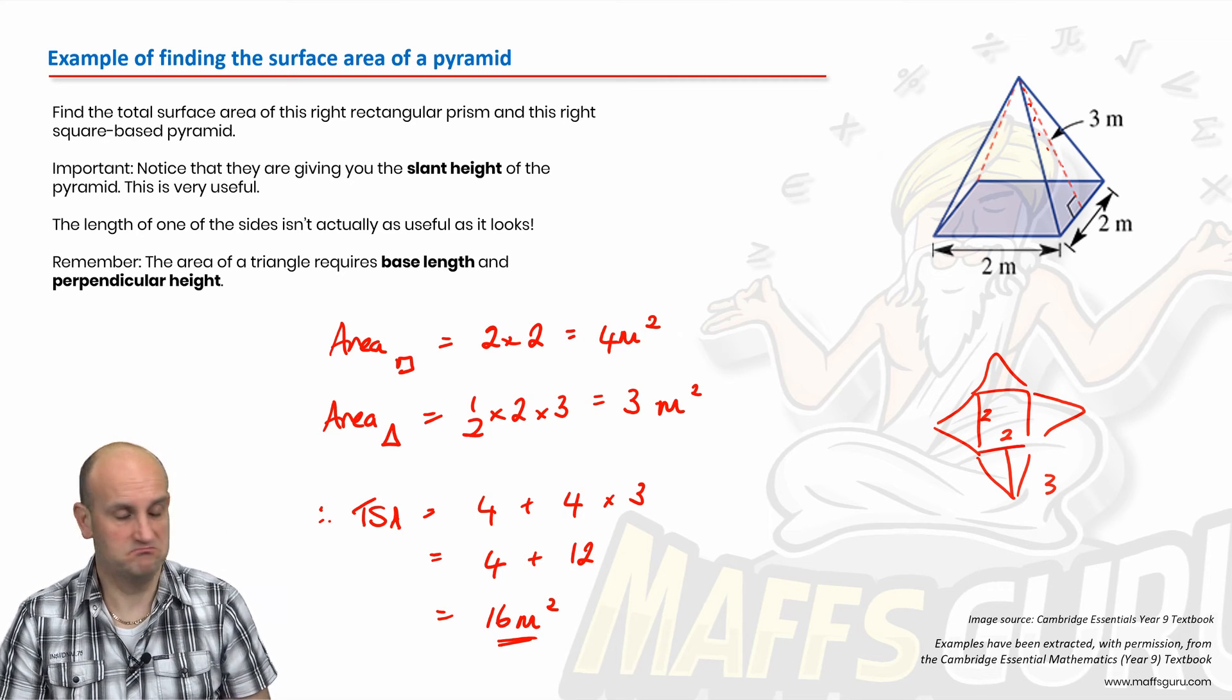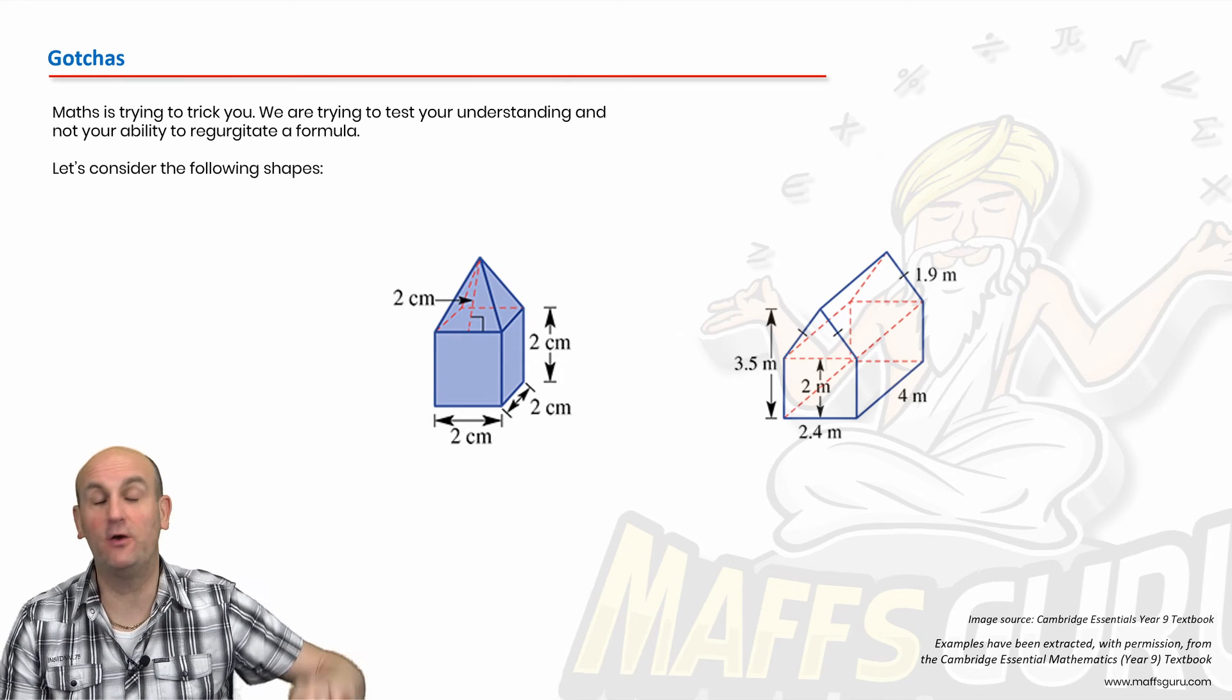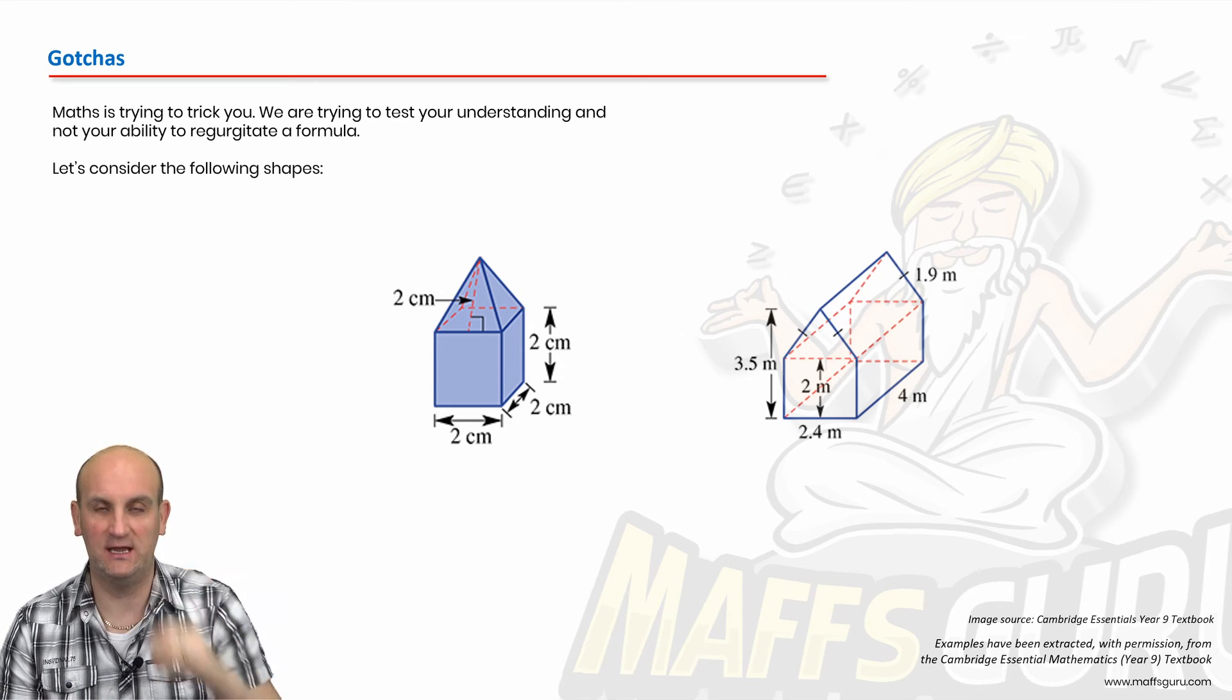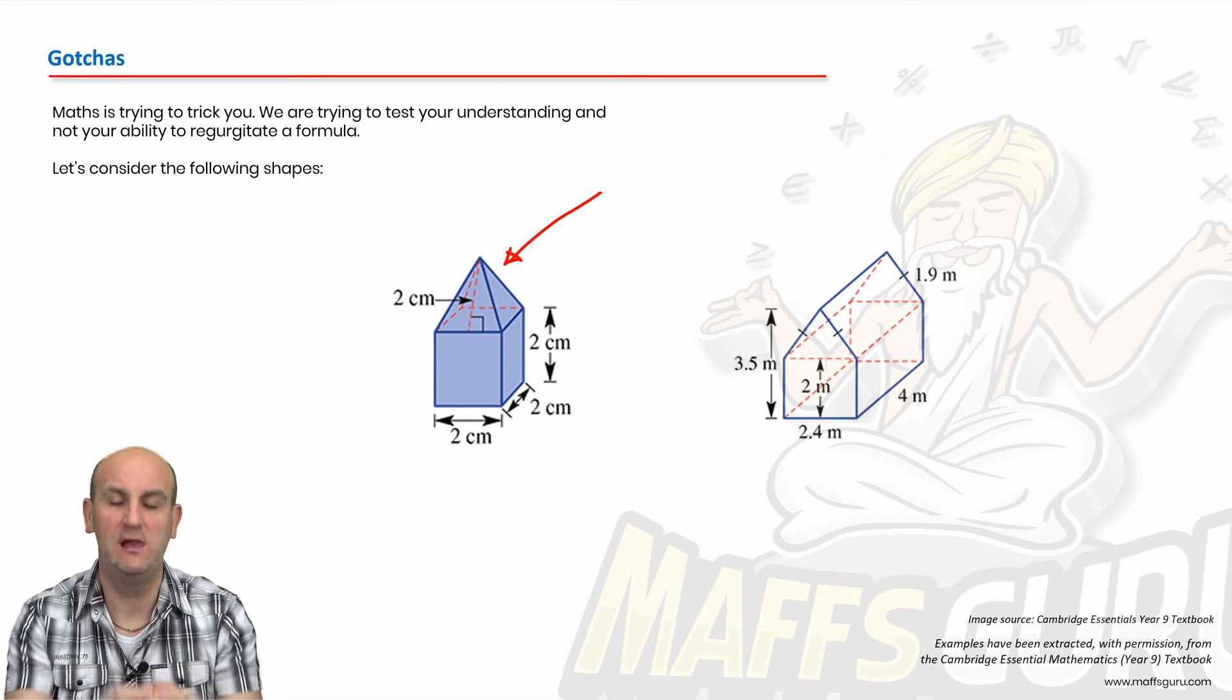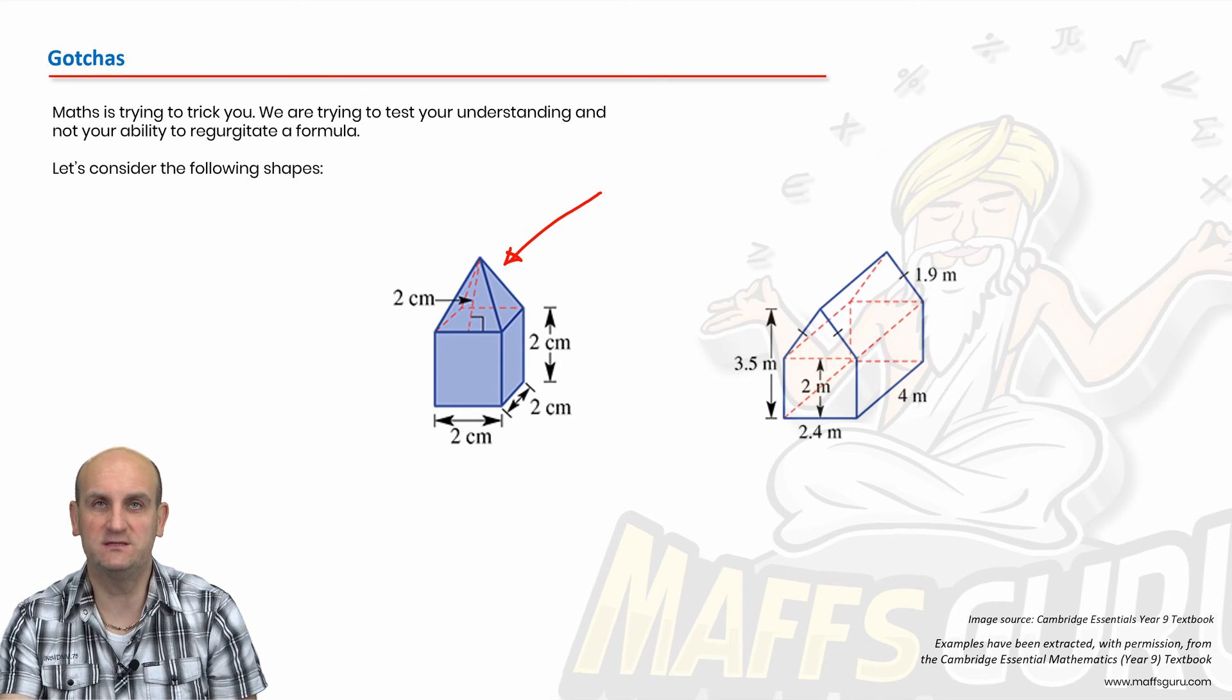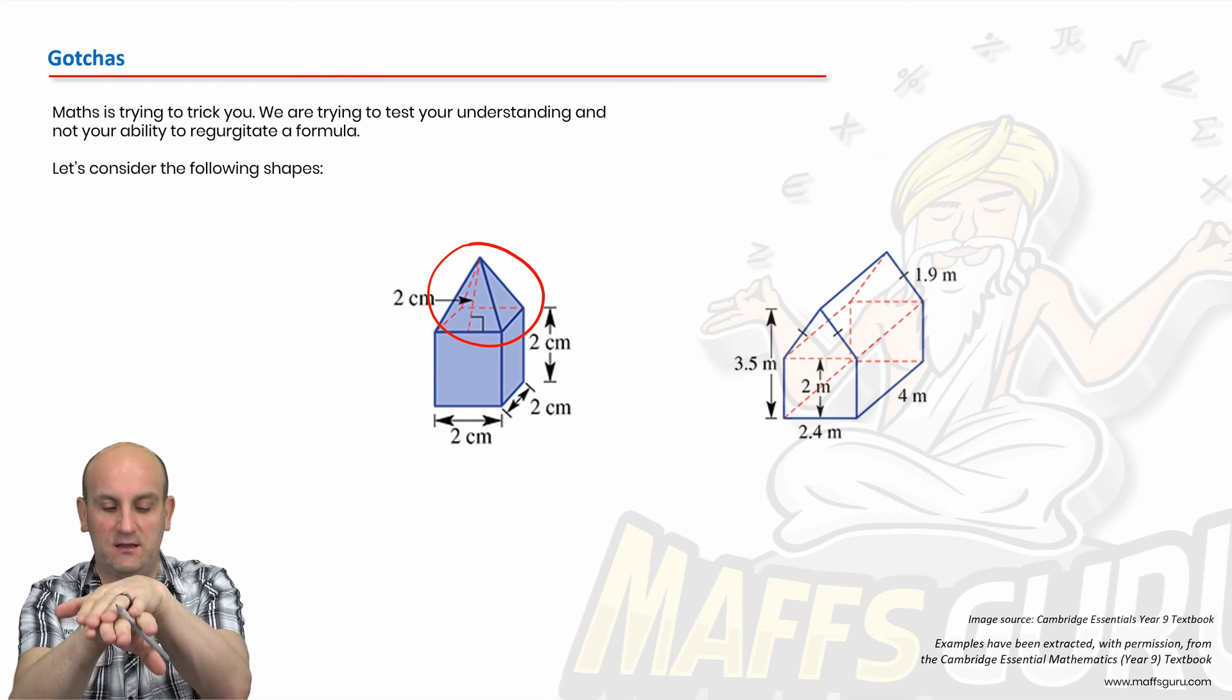Gotchas! We need to be very careful with these type of questions. Surface area is the area outside the shape. This here obviously is some sort of composite shape. We can tell that because we've got a cube, two by two by two, and we have a square base pyramid on the top. If I was going to find the surface area, just remember that the base of this pyramid is not part of the surface because it's hidden underneath or joined to that cube.